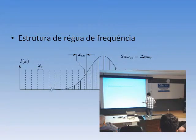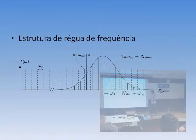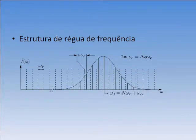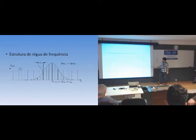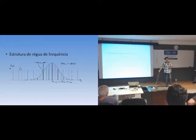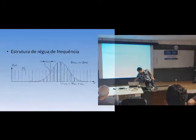Outra coisa interessante é que você tem uma estrutura de régua de frequências. Se você fizer a transformada de Fourier de um trem de pulsos e você tem o perfil de intensidade versus frequência, isso corresponde a diferentes modos longitudinais. E aqui, se você souber identificar um deles, você consegue determinar todos os outros.